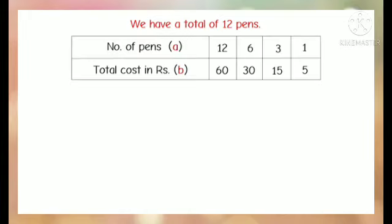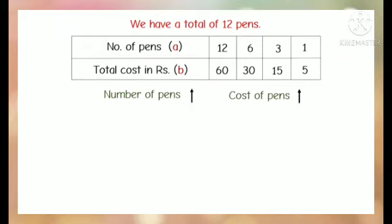We have a total of 12 pens. When the number of pens A is 12, the total cost B is Rs. 60. When A is 6, B is Rs. 30. When A is 3, B is Rs. 15. When A is 1, B is Rs. 5. So when the number of pens is increasing, the cost is increasing, and when the number of pens is decreasing, the cost is also decreasing.